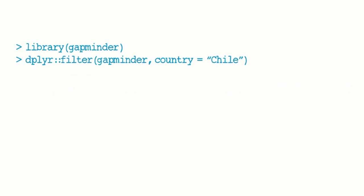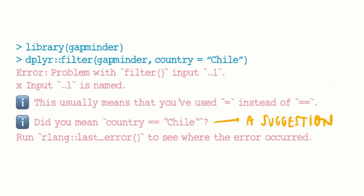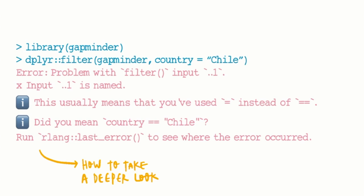Pointing errors is not the same as giving feedback. To learn from your mistakes, you not only need to know where the error is, but you need some clues on how to solve it, so next time you know what to do. Let's take a look at the message for the same error using the filter function from dplyr. The error message says: 'Error, problem with filter, input one. Input one is name. This usually means that you have used one equal sign instead of two. Did you mean country == Chile? Run rlang::last_error() to see where the error occurred.' This message lets us know what the problem is, its probable origin, a suggestion on how it can be solved, and if and only if you want to know where your code failed, how to take a detailed look. What we have here is feedback.